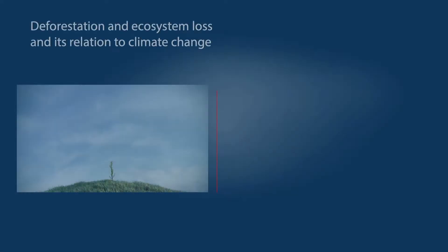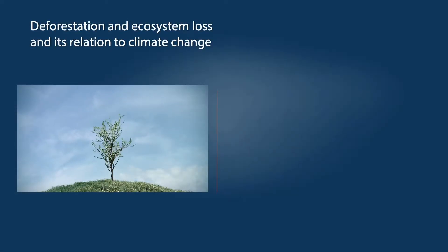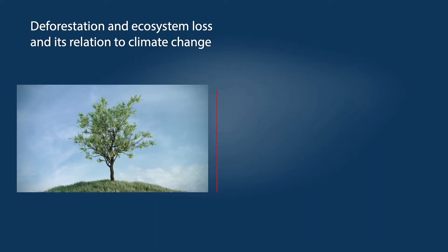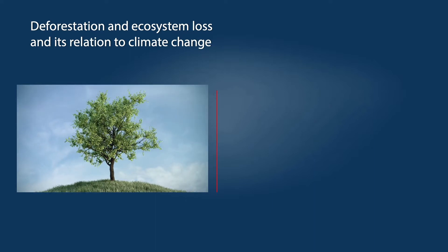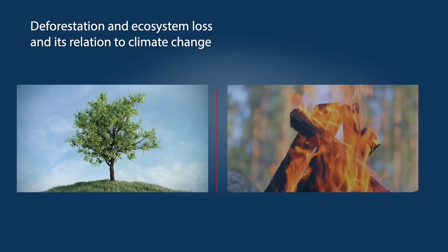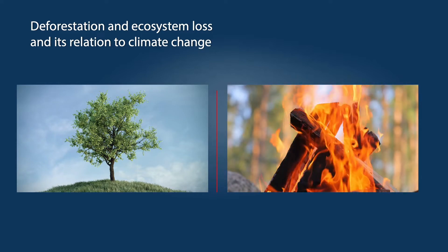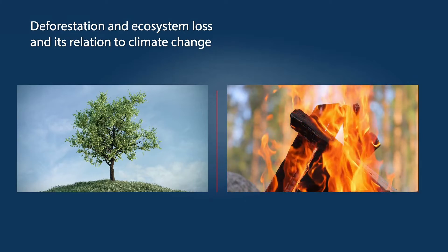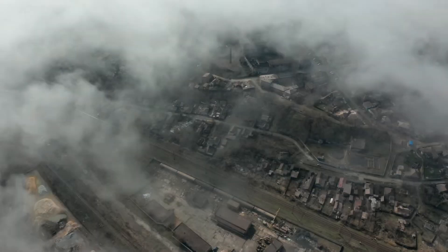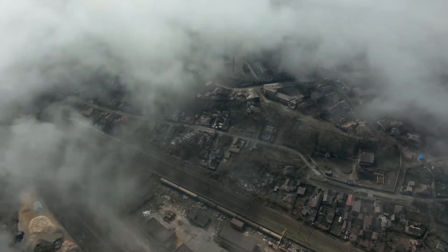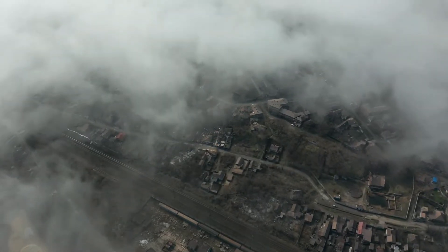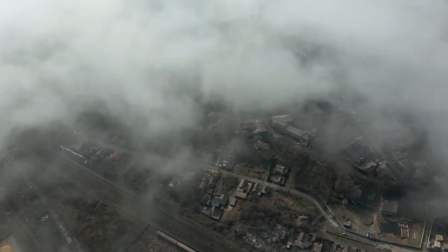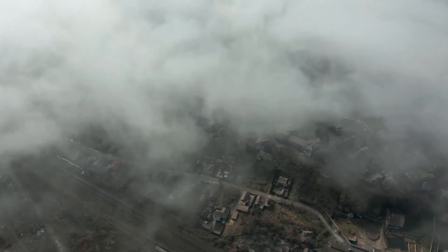As a tree grows, it takes carbon dioxide gas out of the atmosphere and turns it into solid carbon through photosynthesis, which it stores in its trunk, branches, and roots. If the tree is cut and burned, that carbon goes back to the atmosphere as carbon dioxide. Carbon dioxide in the atmosphere is harmful, warming the planet. Carbon-storing forests, however, is beneficial.